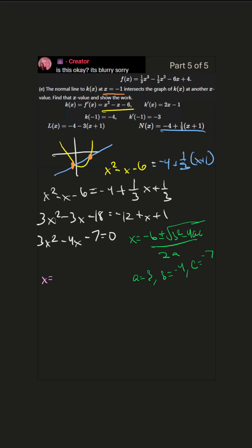We get x equals 4 plus or minus square root, let's see b squared is 16, a times c is negative 21 times 4 is 84 since it's subtracting, all over 2a which is 6.